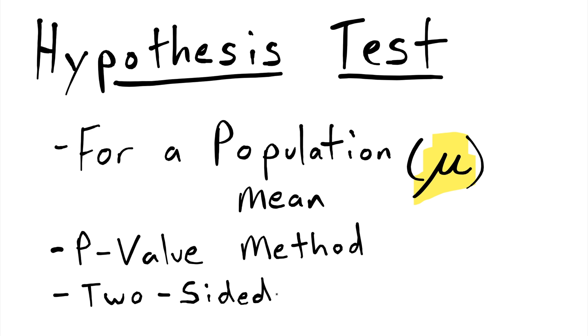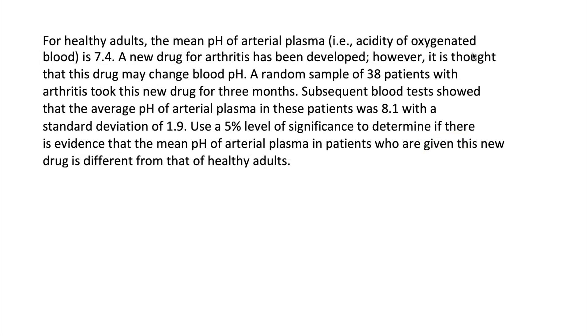Let's go ahead and look at the problem we'll be working on. Let's start out by reading it. For healthy adults, the mean pH of arterial plasma, which is the acidity of oxygenated blood, is 7.4. A new drug for arthritis has been developed. However, it is thought that this drug may change blood pH.